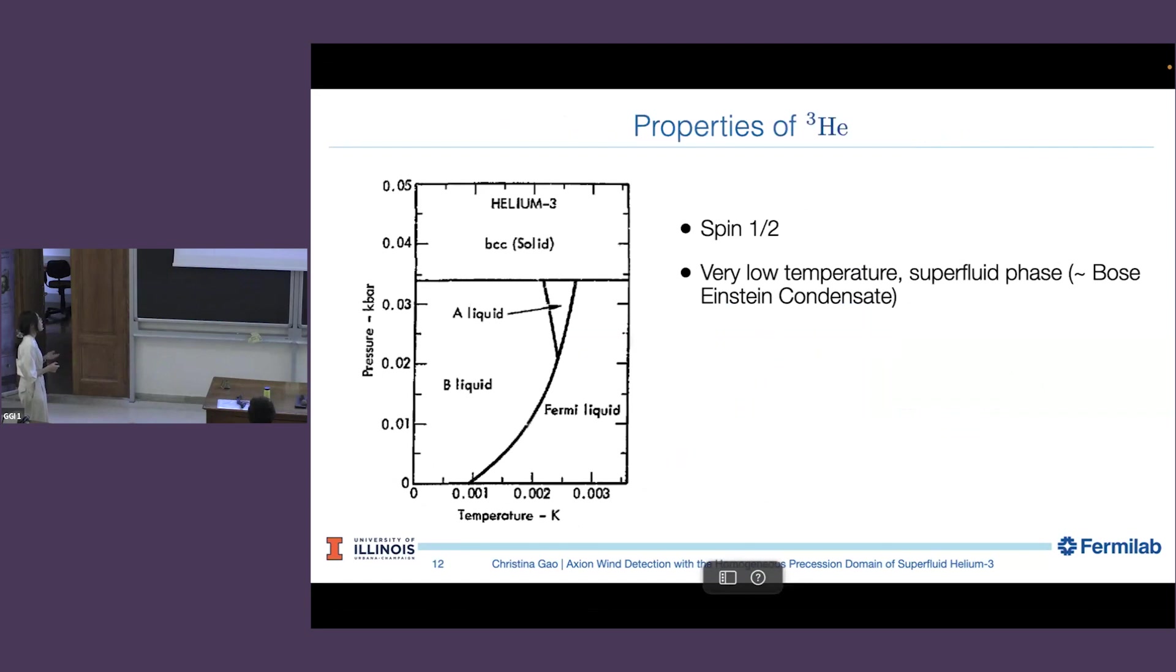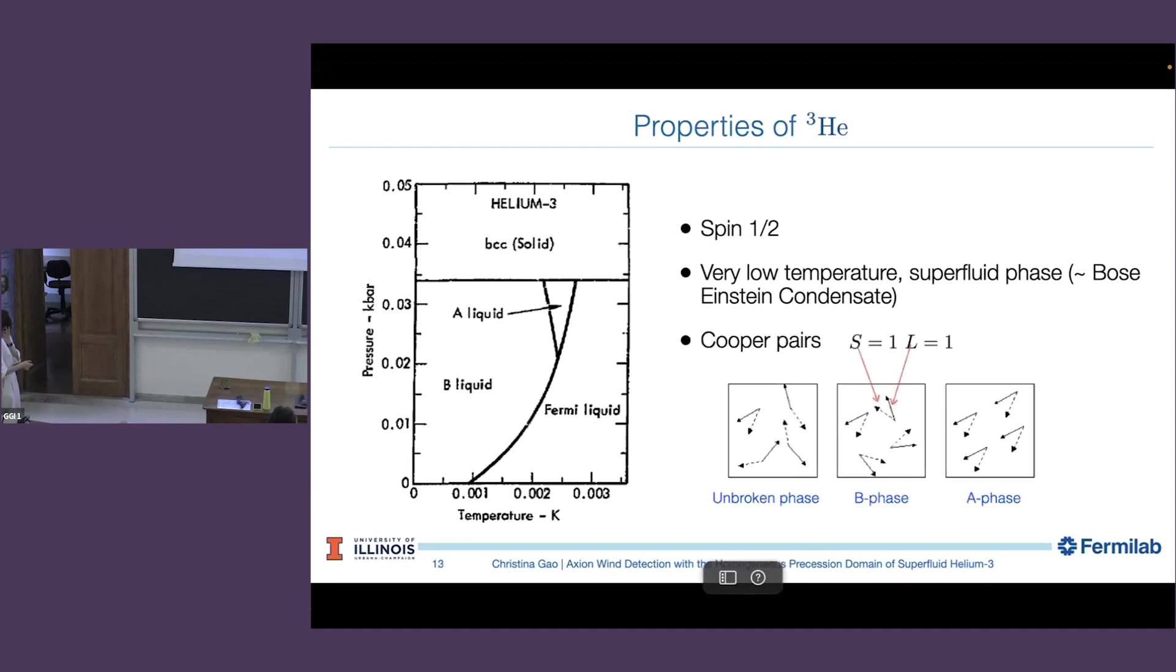Before we proceed, we have to understand how this works. Helium-3, first of all, it's a spin-half. So it's a fermion because it has two protons, two electrons, one neutron. So it behaves very different from its helium-4 isotope. At low temperature, you can still form superfluid phase, which is roughly similar to a BEC idea. Here is a phase diagram for helium-3.